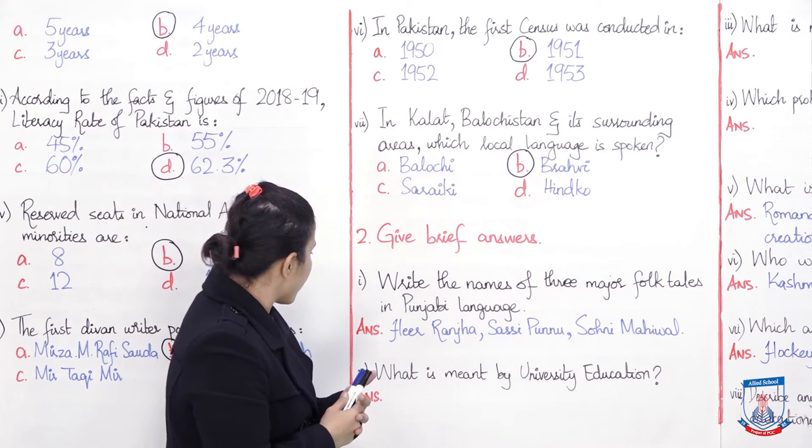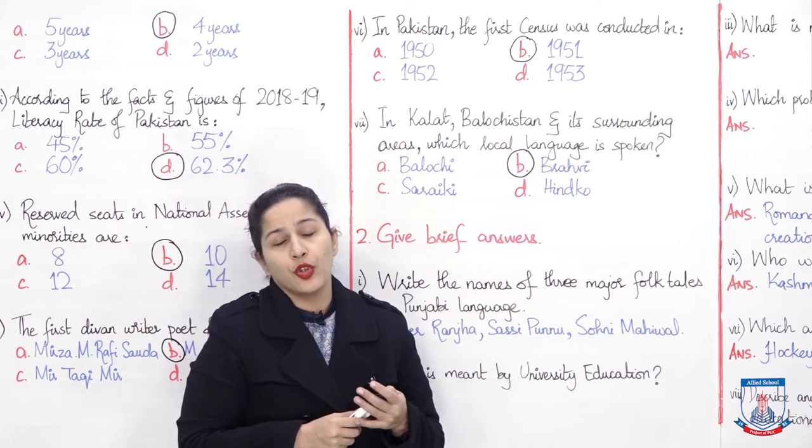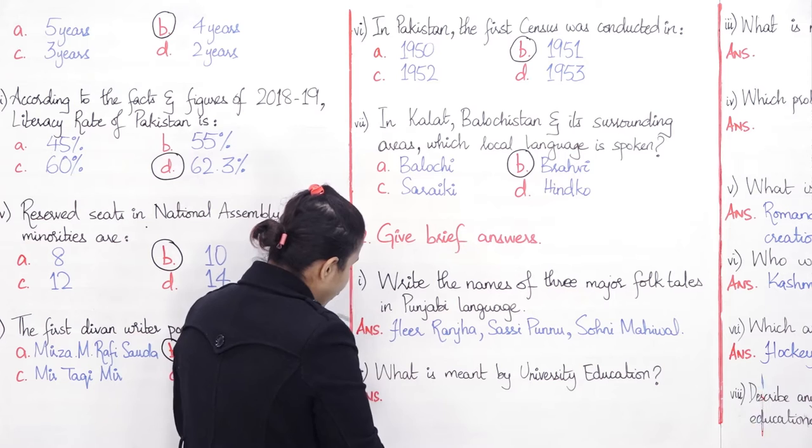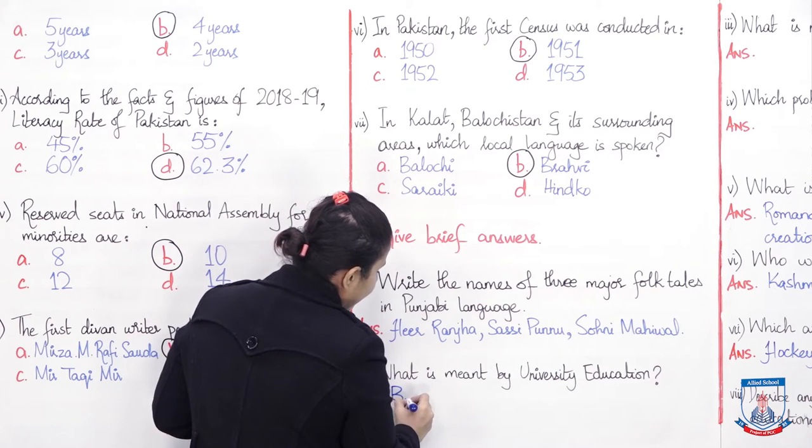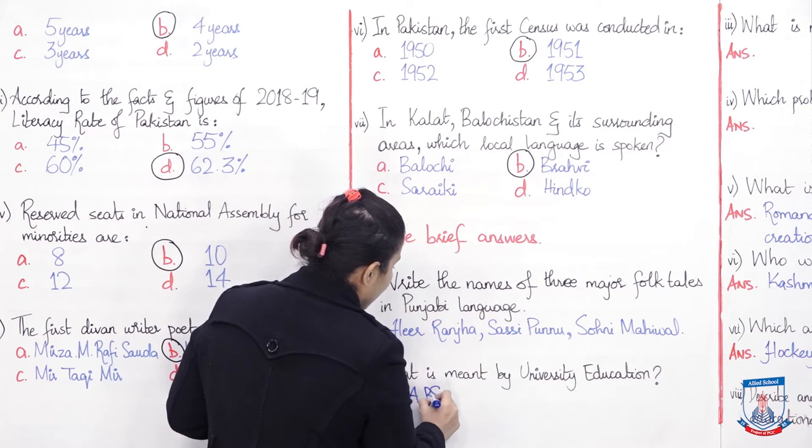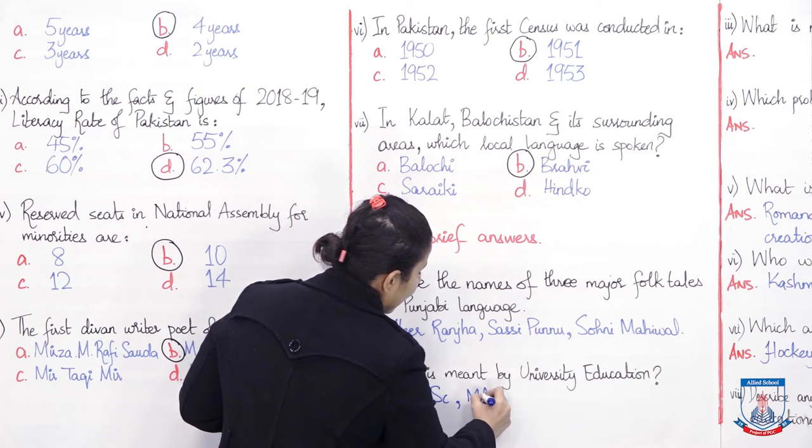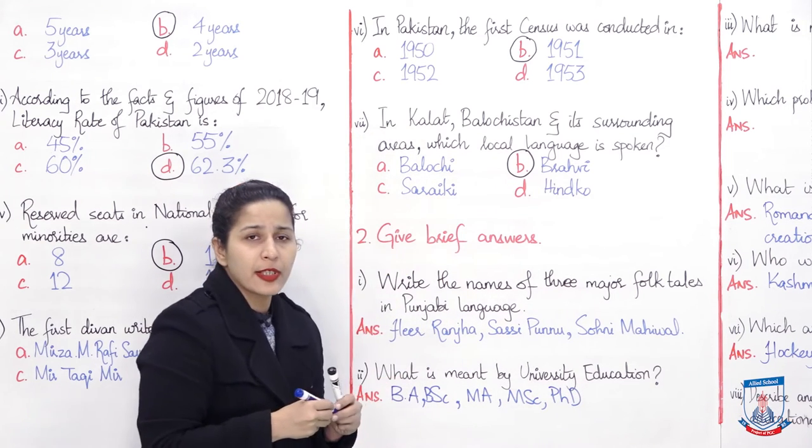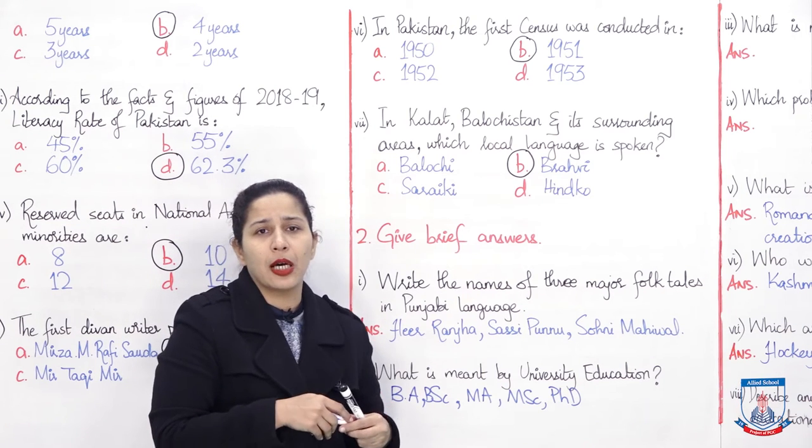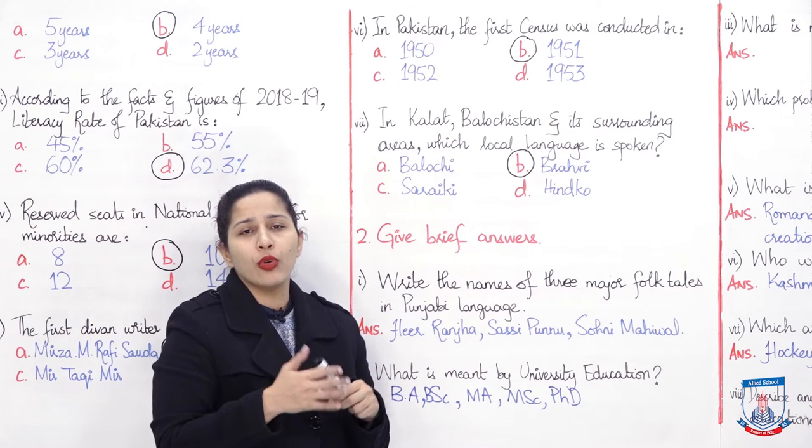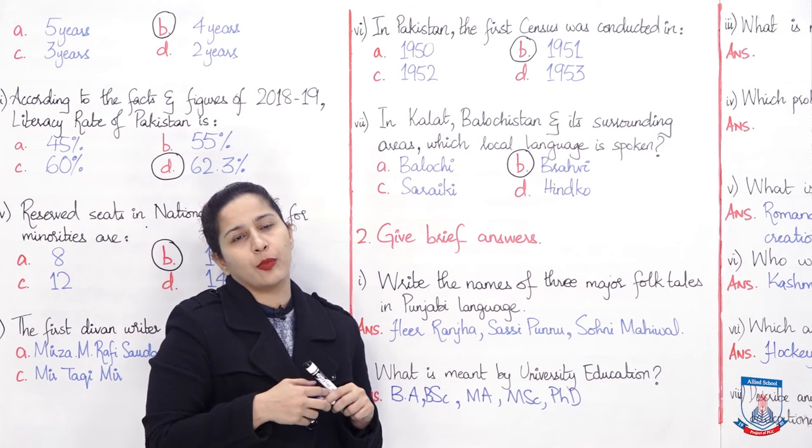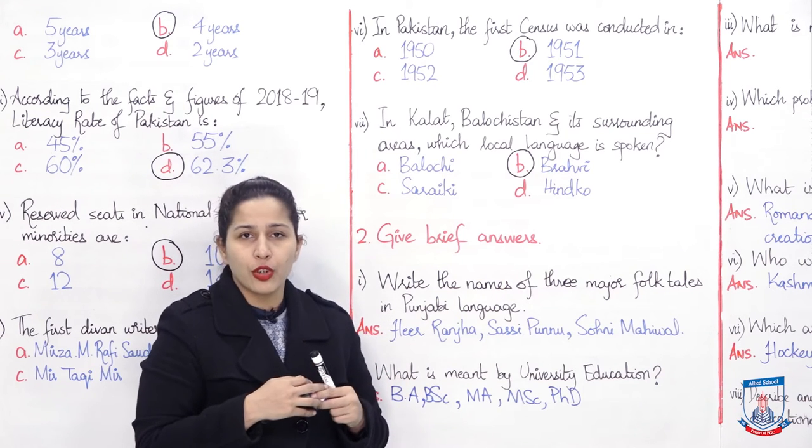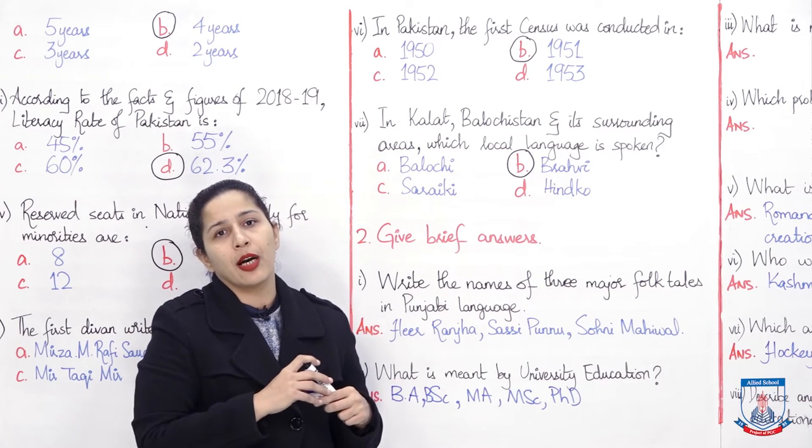What is meant by university education? University education comes after higher secondary education. In university education, if you remember we discussed that the major degrees are BA, BSc, then MA, MSc. In university education, it's not compulsory. From basic bachelor's level onwards, you can do master's degree, you can do PhD degree if you want to study further. It depends on you how far you want to study. Bachelor's normal duration is four years, master's is usually two years, and then PhD is also one and a half to two years program.